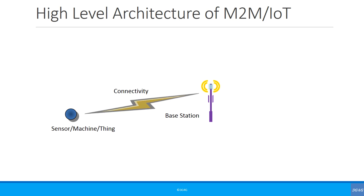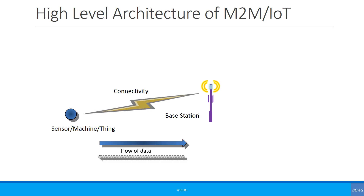You have a sensor, or a machine, or a thing, and that is connected to a base station. It could be something like a Wi-Fi router or any particular wireless technology base station — I've just given it a generic name. The flow of data is generally from the sensor to the base station, and you can also have some flow of data from the base station to the sensor, specifically for configuration, control information, and software updates.